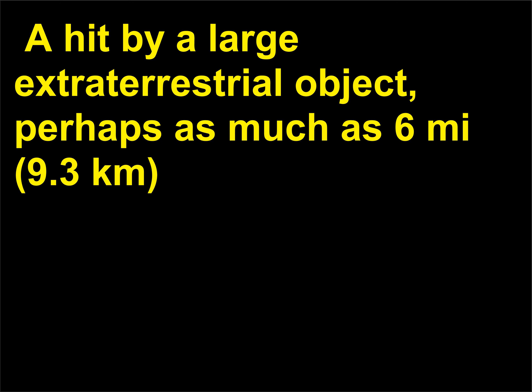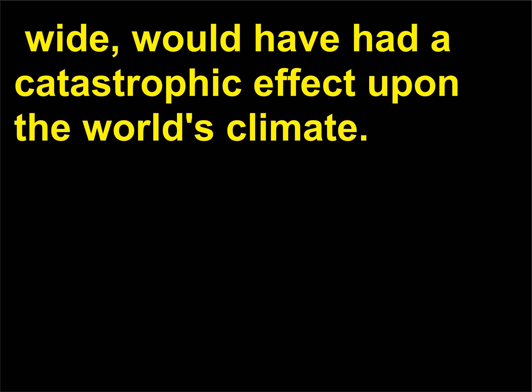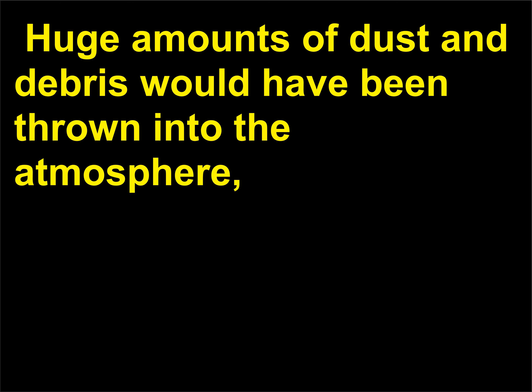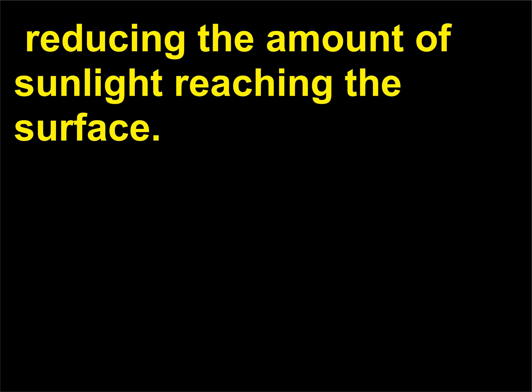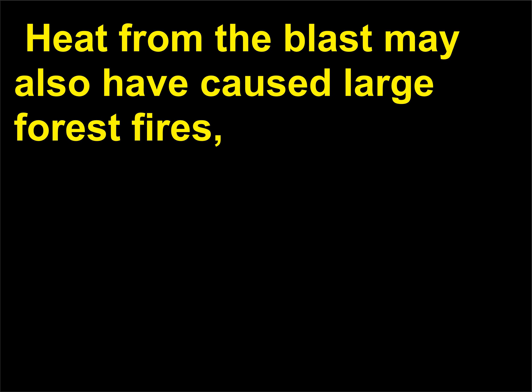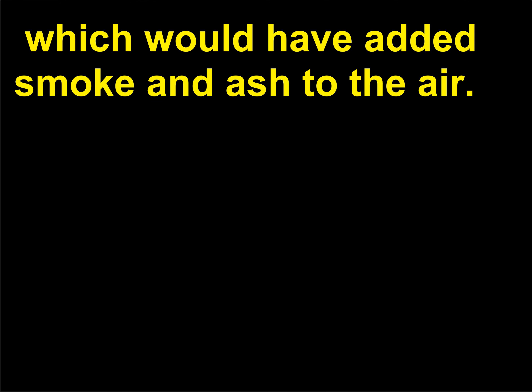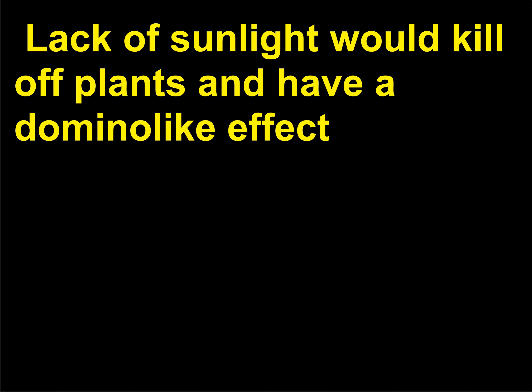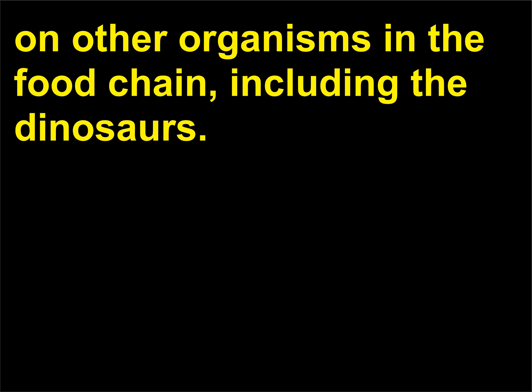A hit by a large extraterrestrial object, perhaps as much as 6 miles (9.3 kilometers) wide, would have had a catastrophic effect upon the world's climate. Huge amounts of dust and debris would have been thrown into the atmosphere, reducing the amount of sunlight reaching the surface. Heat from the blast may also have caused large forest fires, which would have added smoke and ash to the air. Lack of sunlight would kill off plants and have a domino-like effect on other organisms in the food chain, including the dinosaurs.